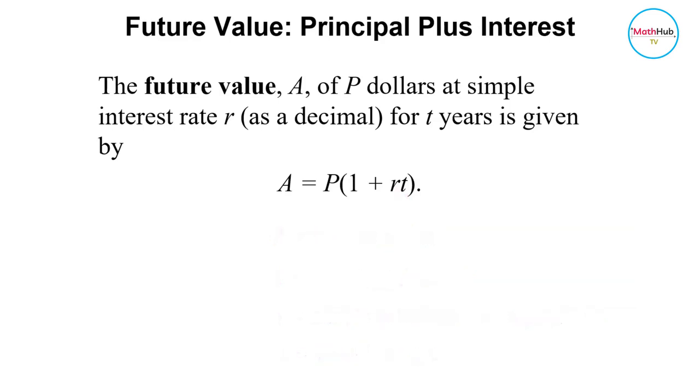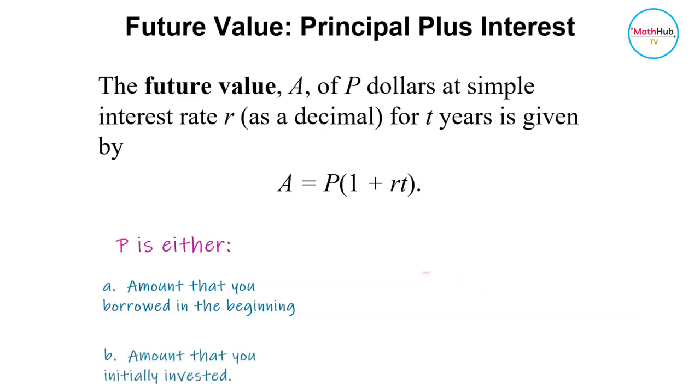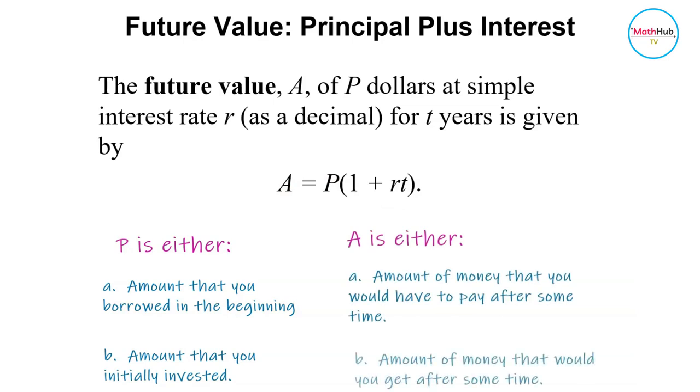Now P is also known as the present value, or that's the principal amount, amount that you borrowed at the beginning. If you look at it as an investment, this is the amount that you initially invested. And A, the future value, is the amount of money that your money would grow into.